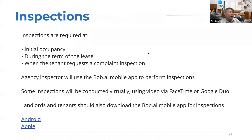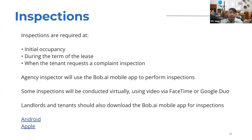Inspections are required at initial occupancy and during the term of the lease — some PHAs do this annually, others every two years. If the tenant requests a complaint inspection, that's separate from the scheduled annual or biannual inspection. Agency inspectors use the Bob.ai mobile app to perform inspections, and some may be conducted virtually via FaceTime or Google Duo, which is especially useful if someone is experiencing COVID symptoms — avoiding the need to reschedule and allowing faster move-in.